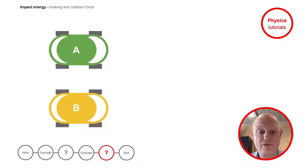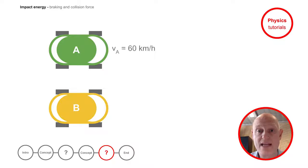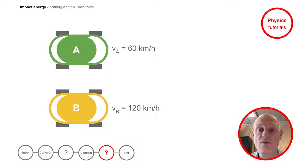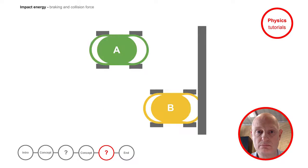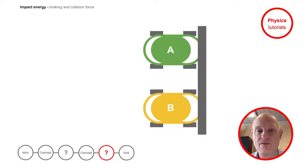I have a question for you. Write down the details so that it is easier for you to answer the question. Two identical cars with the same mass are driving at steady speed. Car A has a velocity of 60 km/h and car B has a velocity of 120 km/h. Both cars collide against a concrete wall. The driver of car A has to endure an impact force of 1500 newtons.